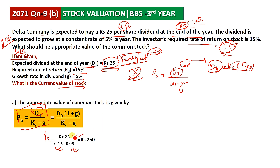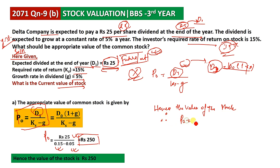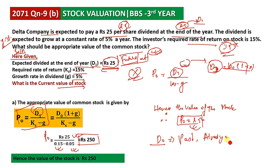P0 equals 25 divided by 0.15 minus 0.05, which equals 25 divided by 0.10, giving 250. Therefore, the value of the stock P0 equals 250.